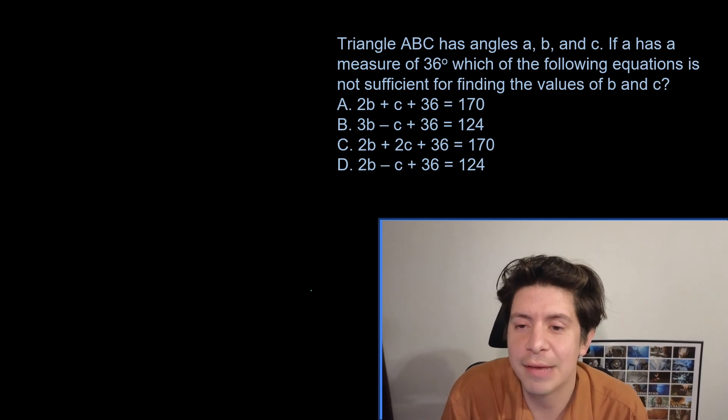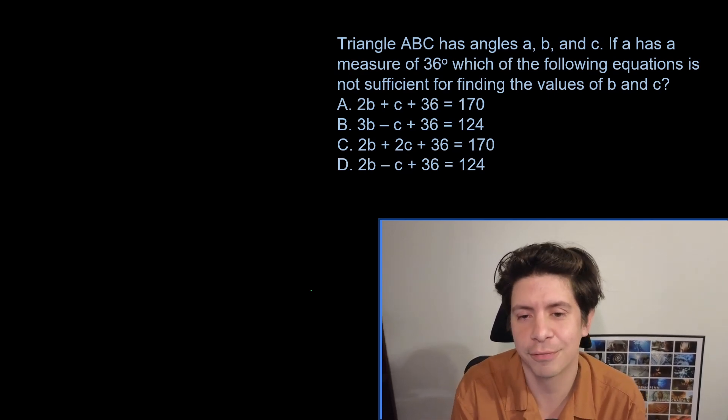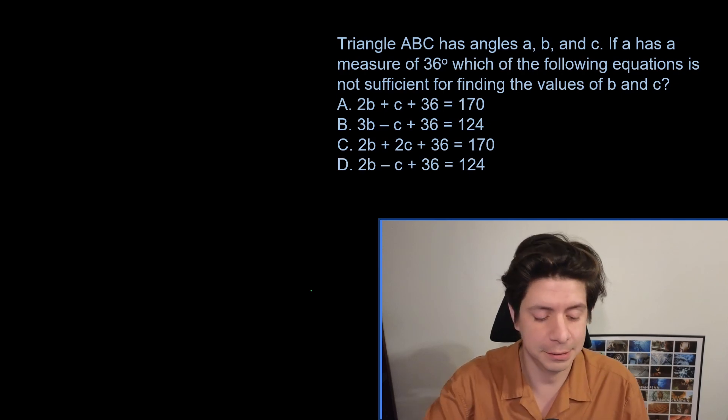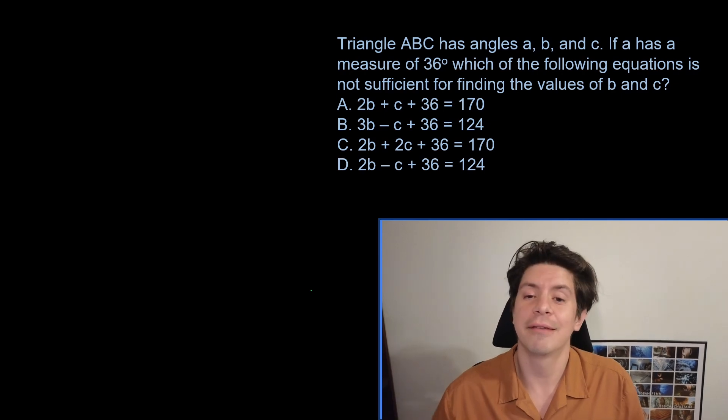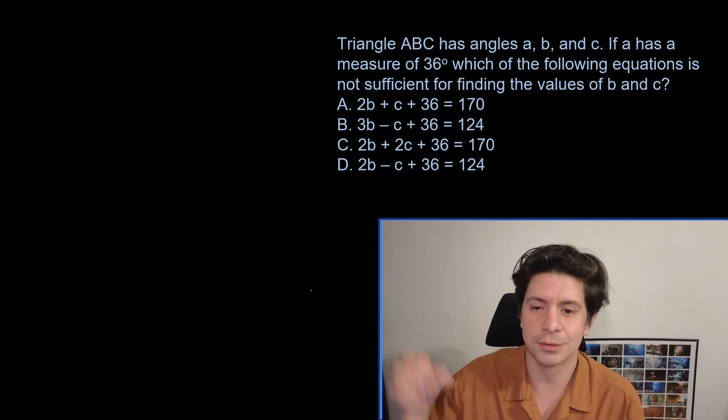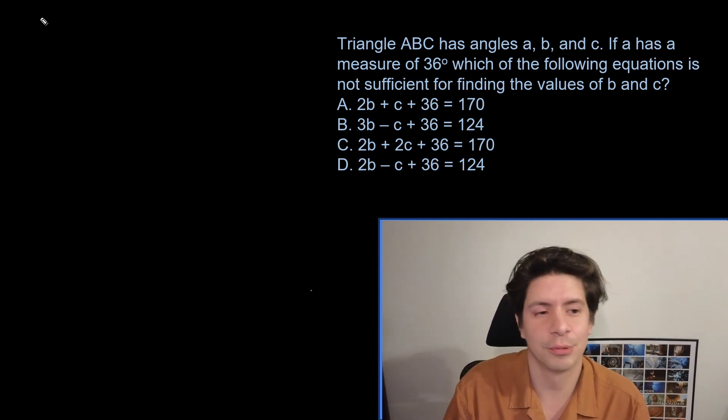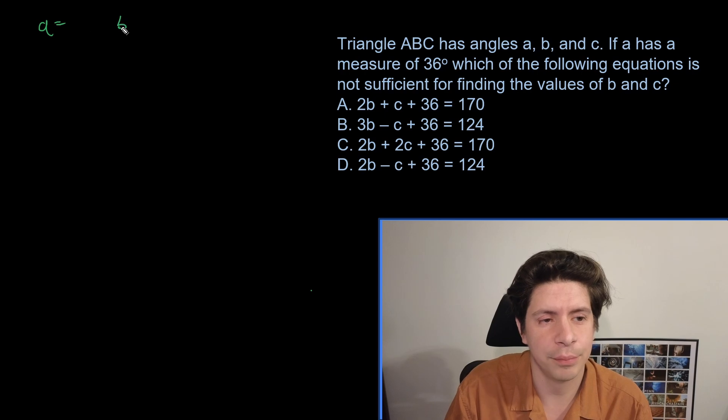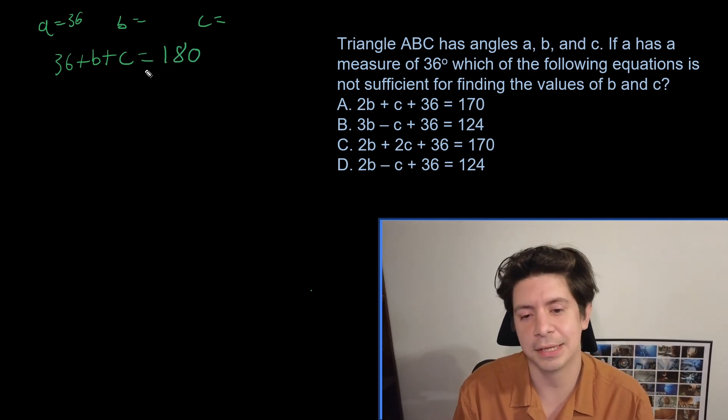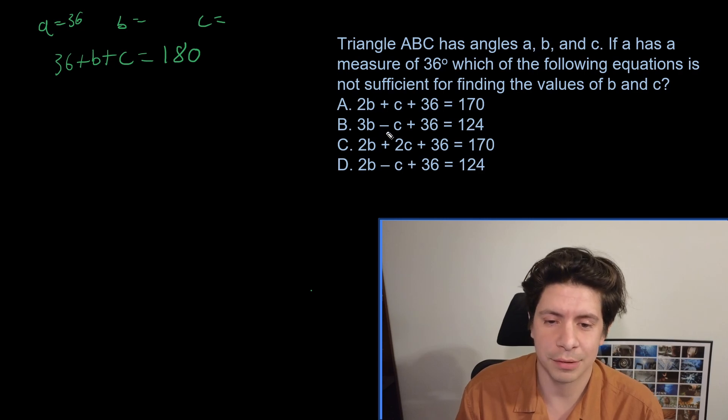So we're going to start with this one here. Triangle ABC has angles A, B, and C. If A has a measure of 36 degrees, which of the following equations is not sufficient for finding the values of B and C? So this one is conceptual. We have three variables and typically with three variables you need three equations, but we already have one of the variables values. So we only need two equations.